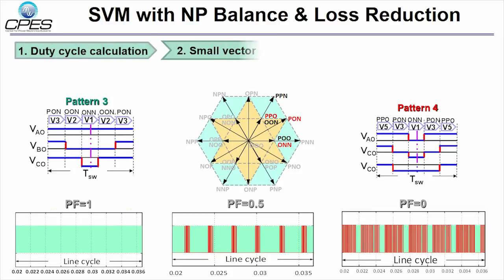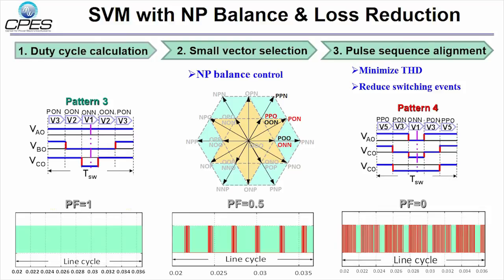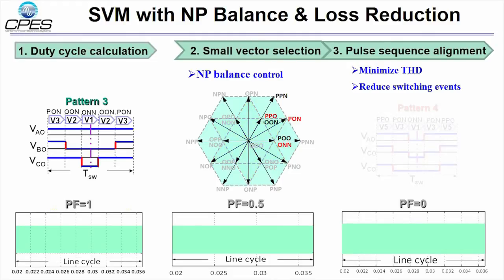For the conventional SVM method, the small vector is selected prior to the pulse sequence alignment. The improved SVM coordinates select the small vector considering both the NP balance and pulse sequence patterns, so that we can eliminate the undesired pattern 4 at non-unity power factor.